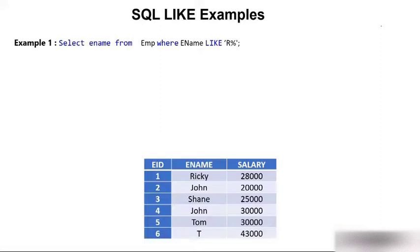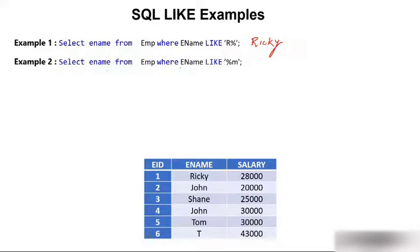Now consider a table with six employees numbered one to six. One name is Ricky, another is Shane, and the last is 'T'. For SELECT ename FROM emp WHERE ename LIKE 'R%', the answer is Ricky. For WHERE ename LIKE '%M', we are looking for names ending with 'M'.